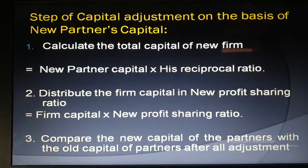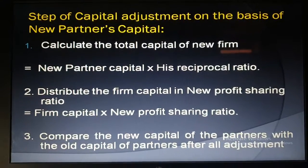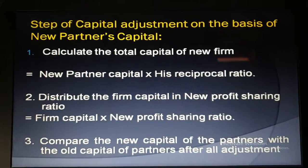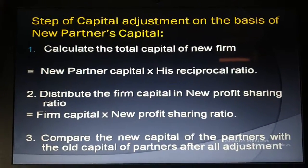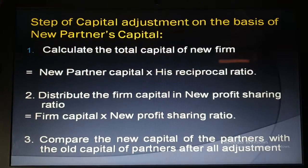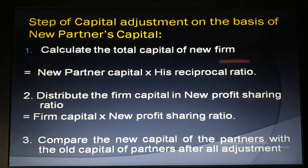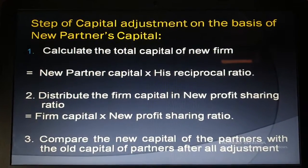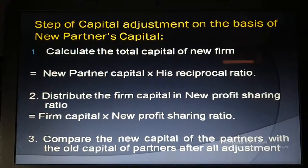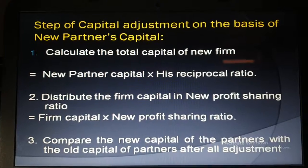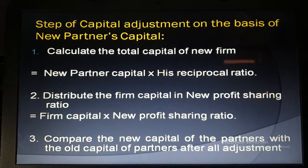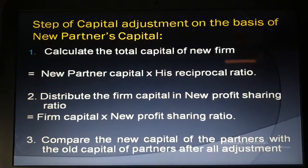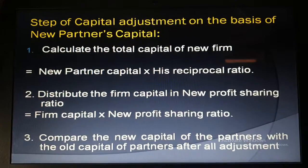Now here are the steps of calculating capital adjustment on the basis of new partner's capital. First, calculate the total capital of the firm using the new partner's capital and his reciprocal ratio. We take the new partner's capital and new partner's reciprocal ratio because we are doing capital adjustment on the basis of new partner's capital. This allows you to find out the total capital of the new firm.